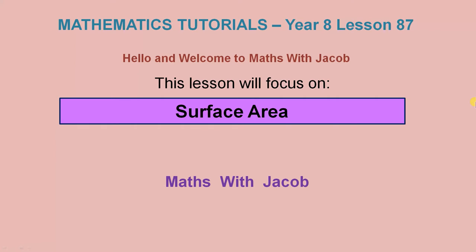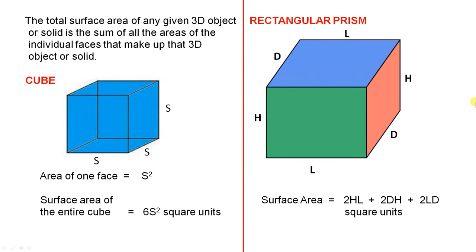Hello and welcome to Maths with Jacob. This lesson will focus on surface area. The total surface area of any given 3D object or solid is the sum of all the areas of the individual faces that make up that 3D object or solid.